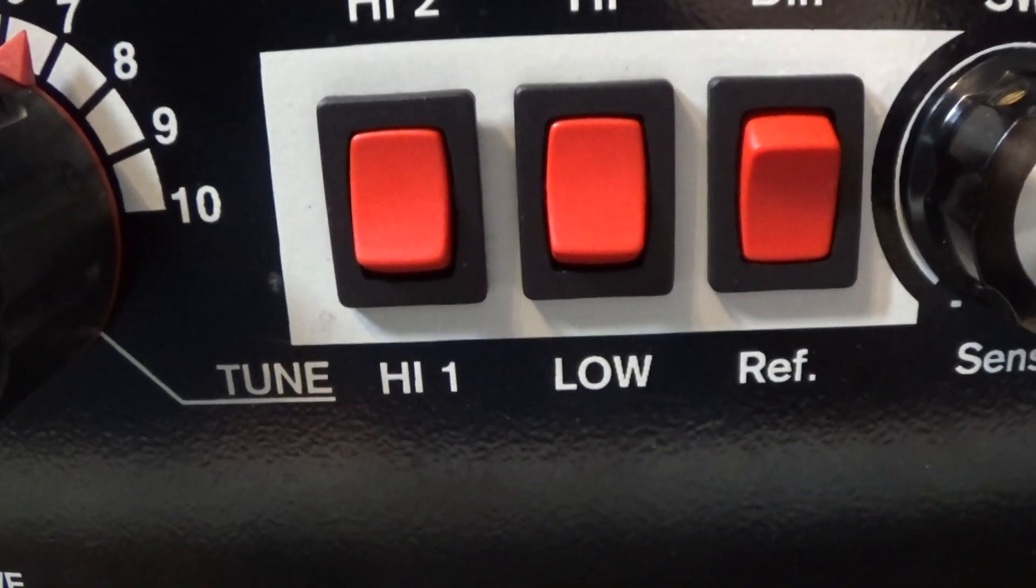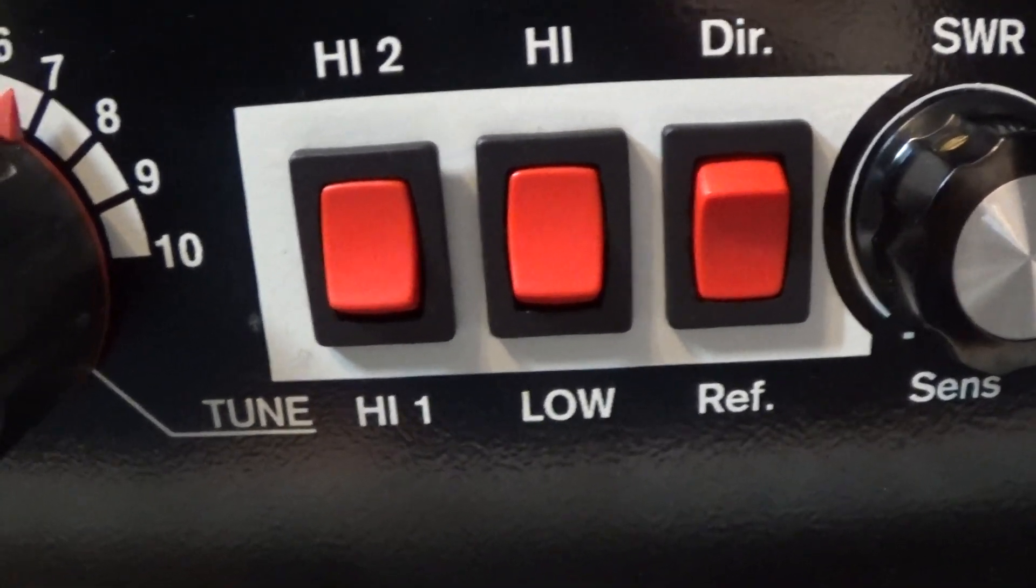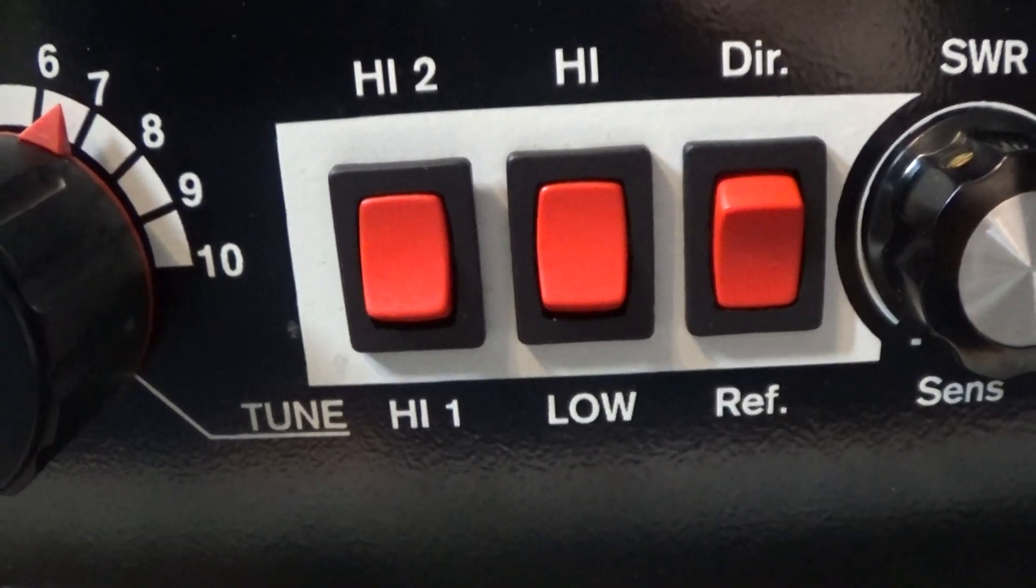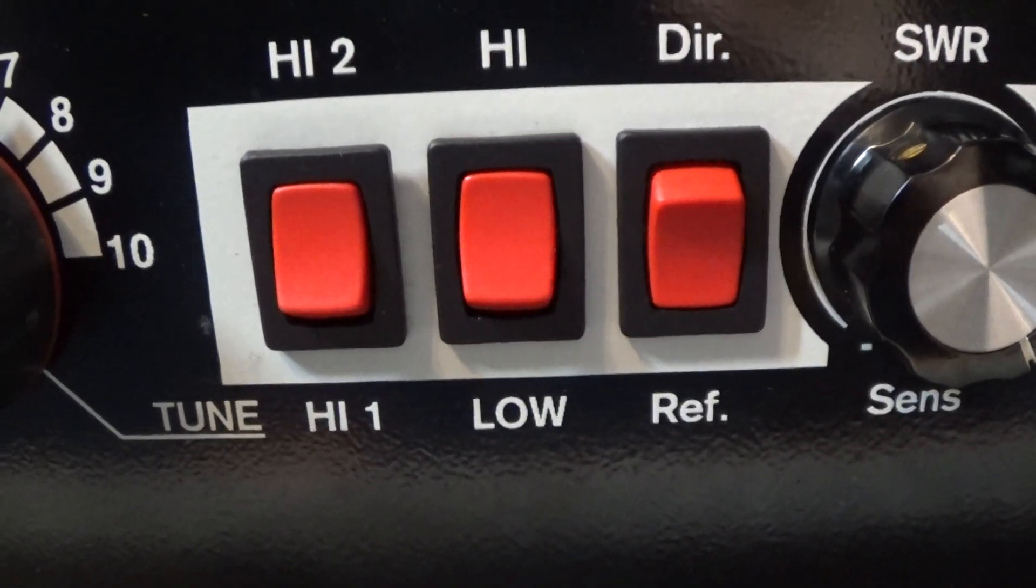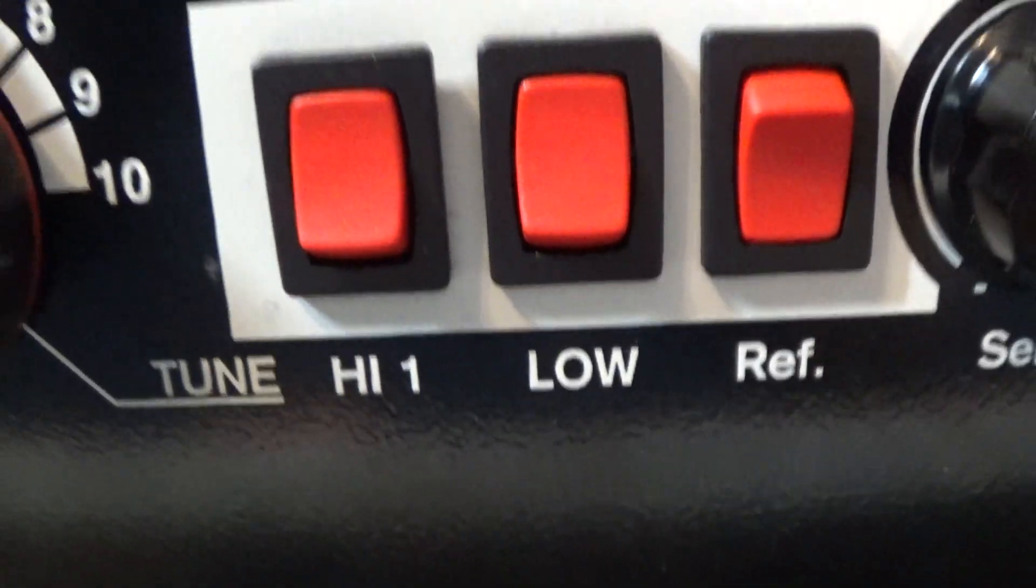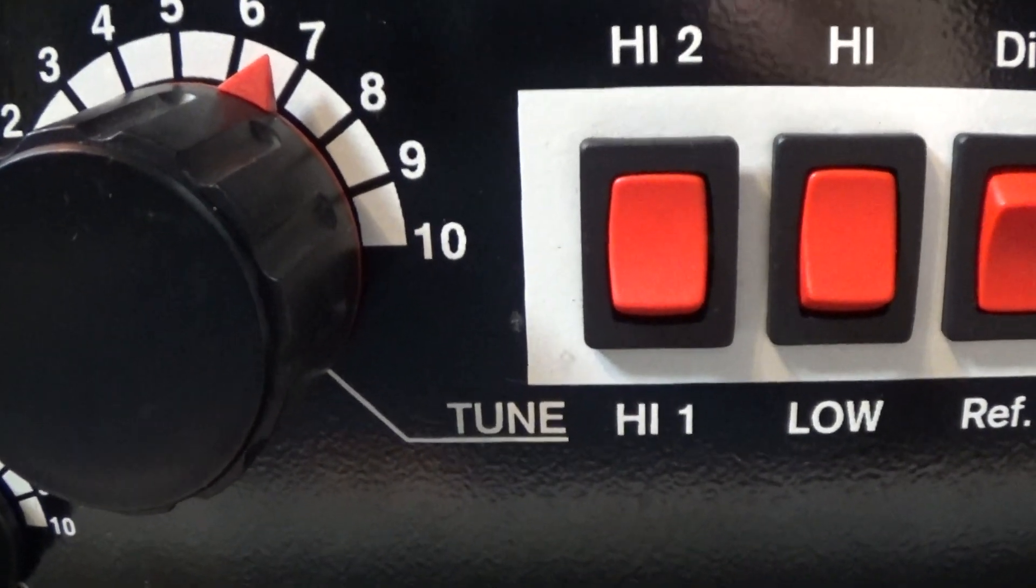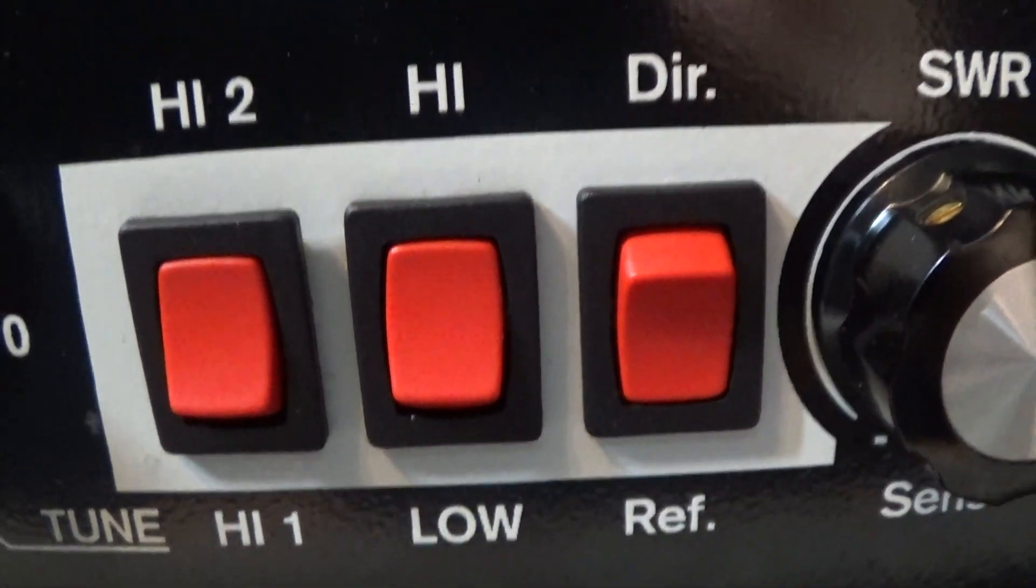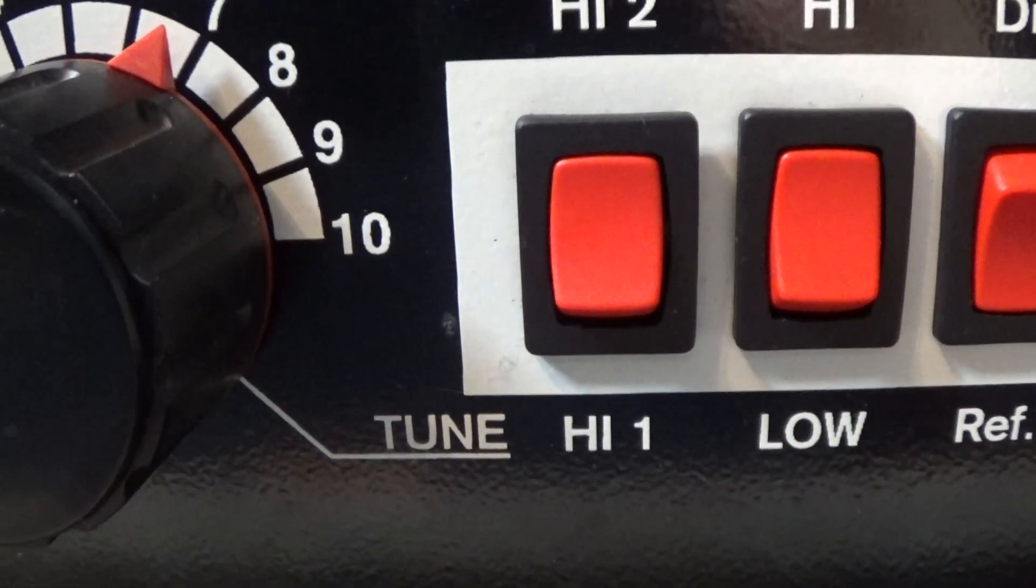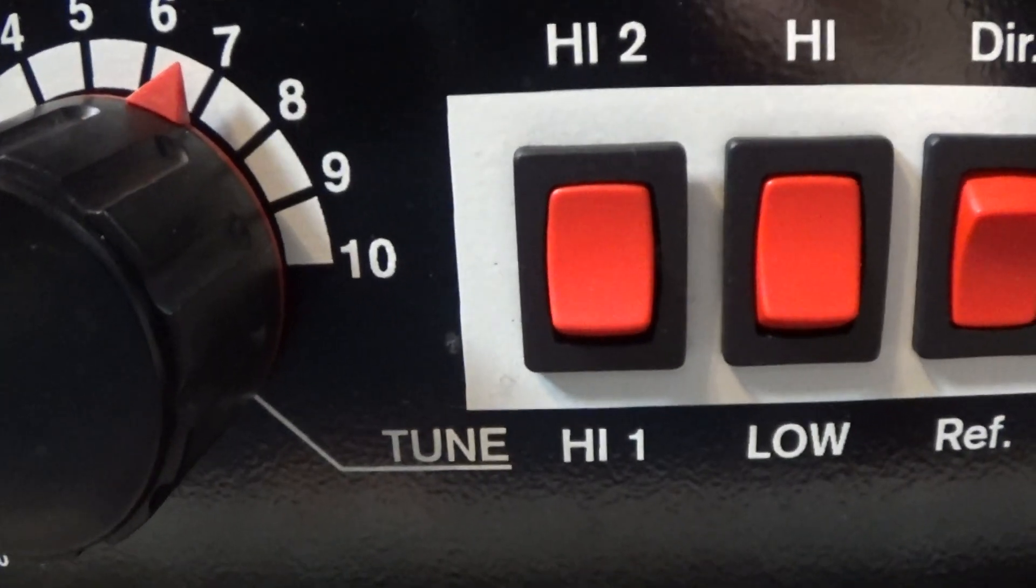How this works is this amp has three taps on the high voltage transformer for high, medium and low, so there are a total of three different power levels. The way it works with these two switches is if you put the high low switch there on low, the amp is going to be low power regardless of what the high one and high two is on. When you put the low switch on high then the high one and high two are activated, and high one would be medium and high two on and high on would be high power or full power for this amplifier.